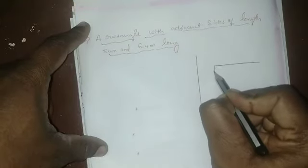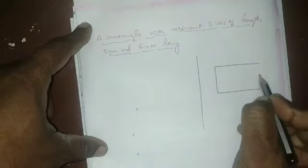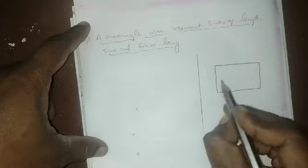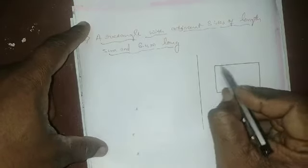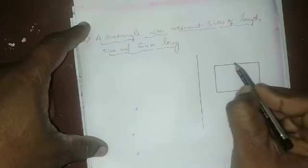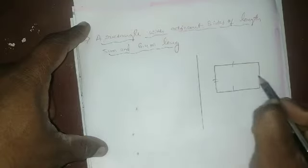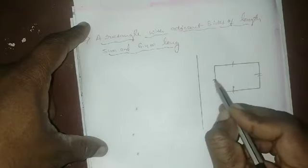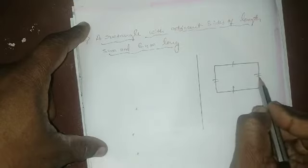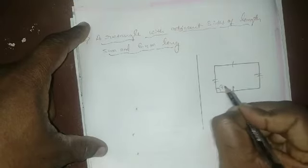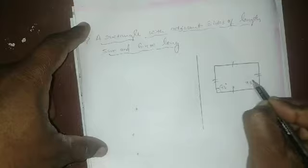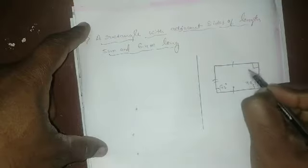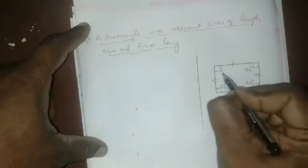This is a rectangle. In a rectangle, opposite sides are equal. In a square, all sides are equal, whereas in a rectangle, only opposite sides are equal. Each angle in both a square and a rectangle is equal to 90 degrees.